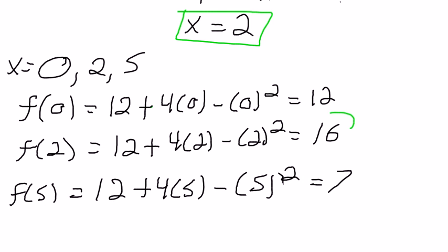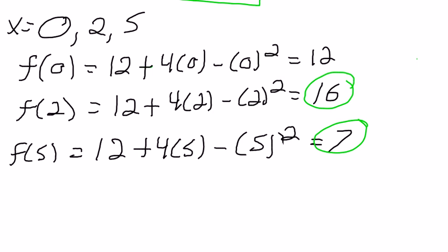So it's pretty obvious that this is our highest and this is our lowest. Therefore, that is our maximum value and this is our absolute minimum value.